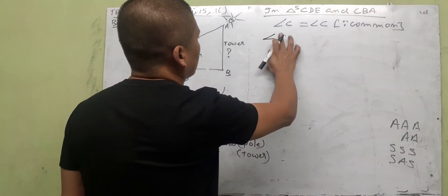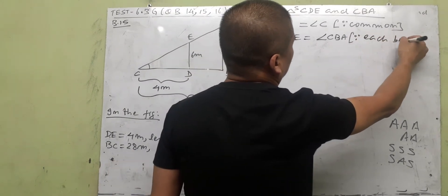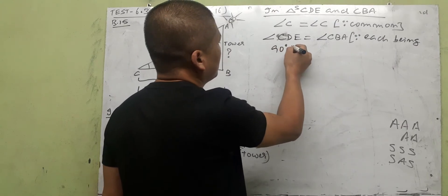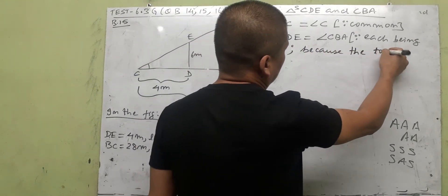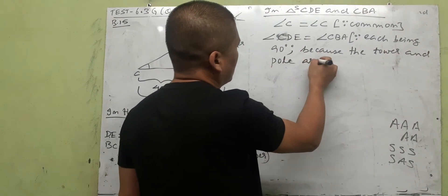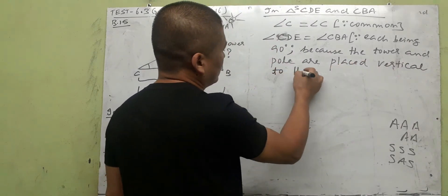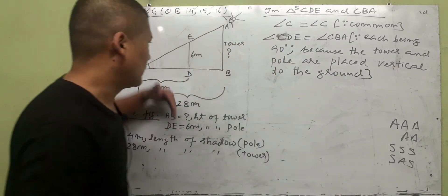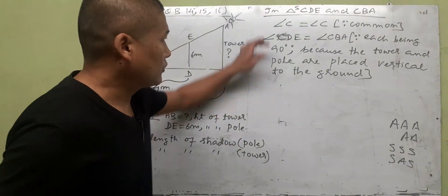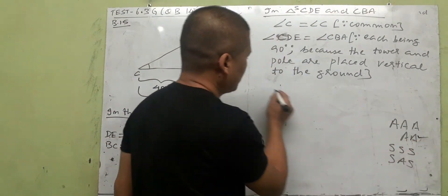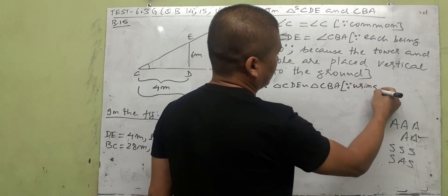Angle C is common to both triangles. Angle CDE equals angle CBA, each being 90 degrees, because the tower and pole are placed vertical — perpendicular to the ground. So by the AA (double A) similarity condition, triangle CDE is similar to triangle CBA.